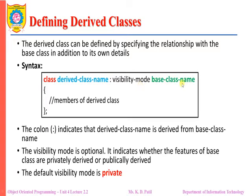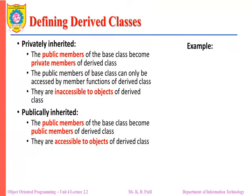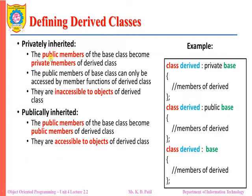By default the visibility mode is private, meaning we can derive properties privately and access the member functions and data members of the base class privately. When the public members of the base class are derived privately, those public members of the base class become the private members of the derived class. They can only be accessed by the member functions of the derived class.